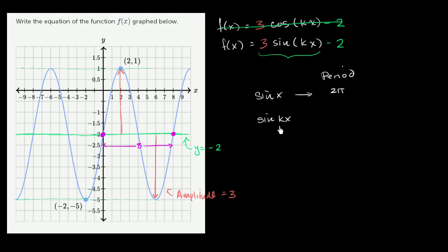So what would be the period of sine of kx? Well, now your x, your input, is increasing k times faster. So you're going to get to the same point k times faster. So your period is going to be 1 kth as long. So now your period is going to be 2π over k.